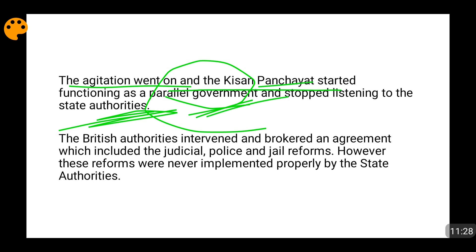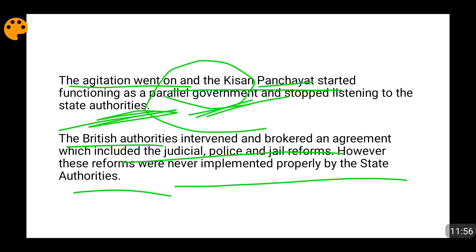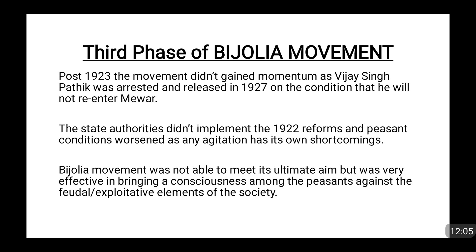The situation became very unstable. The British authorities intervened and brokered an agreement between the Maharana of Udaipur and the Kisan Panchayat, which represented the peasants. Judicial, police, and jail reforms were to be introduced. Both sides agreed to the reforms, but these reforms were never actually implemented by the state authorities, which created deep resentment among the peasants and brought about the third phase of the Bijouliya movement, starting in 1923 and going up to 1941.